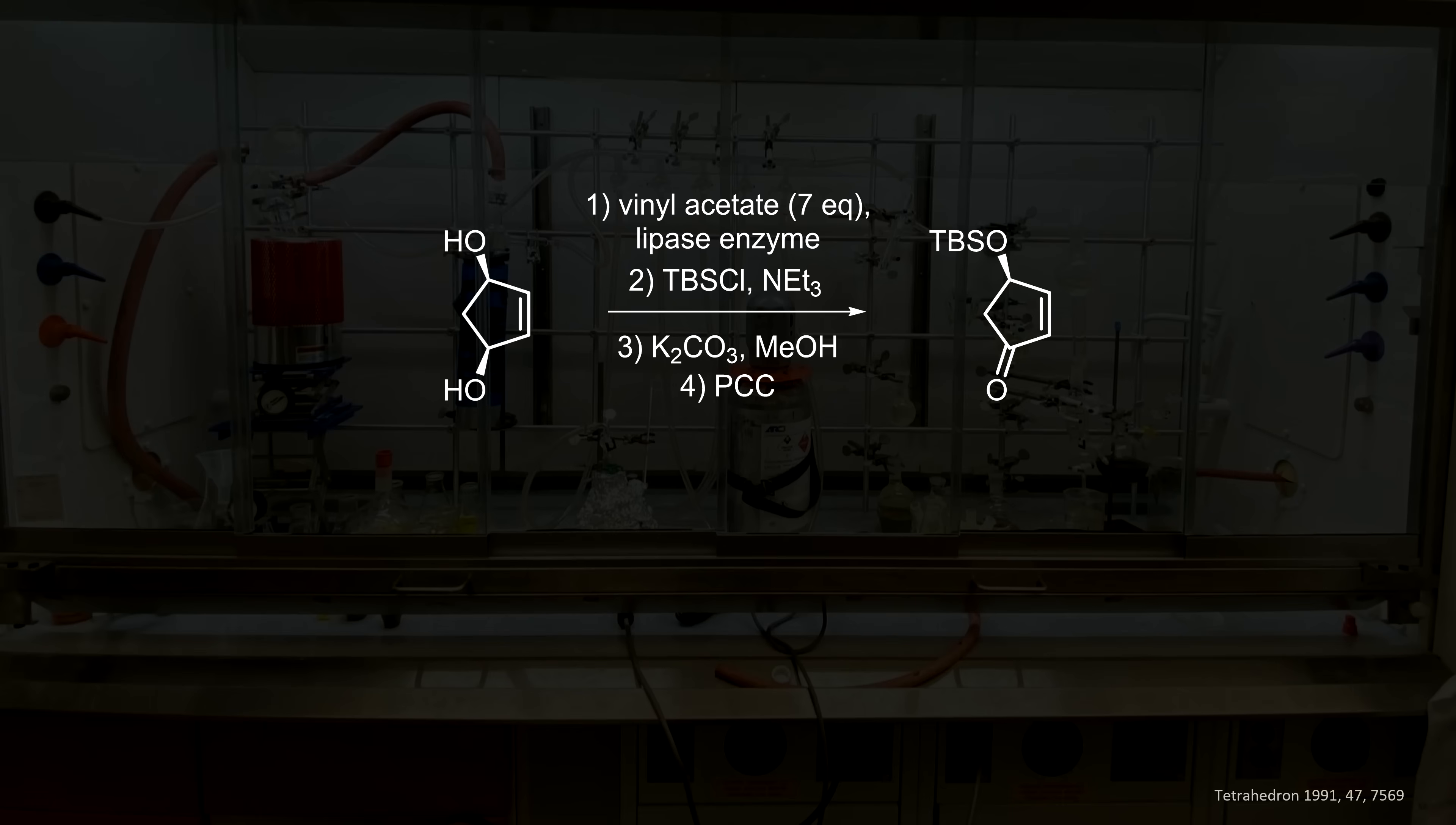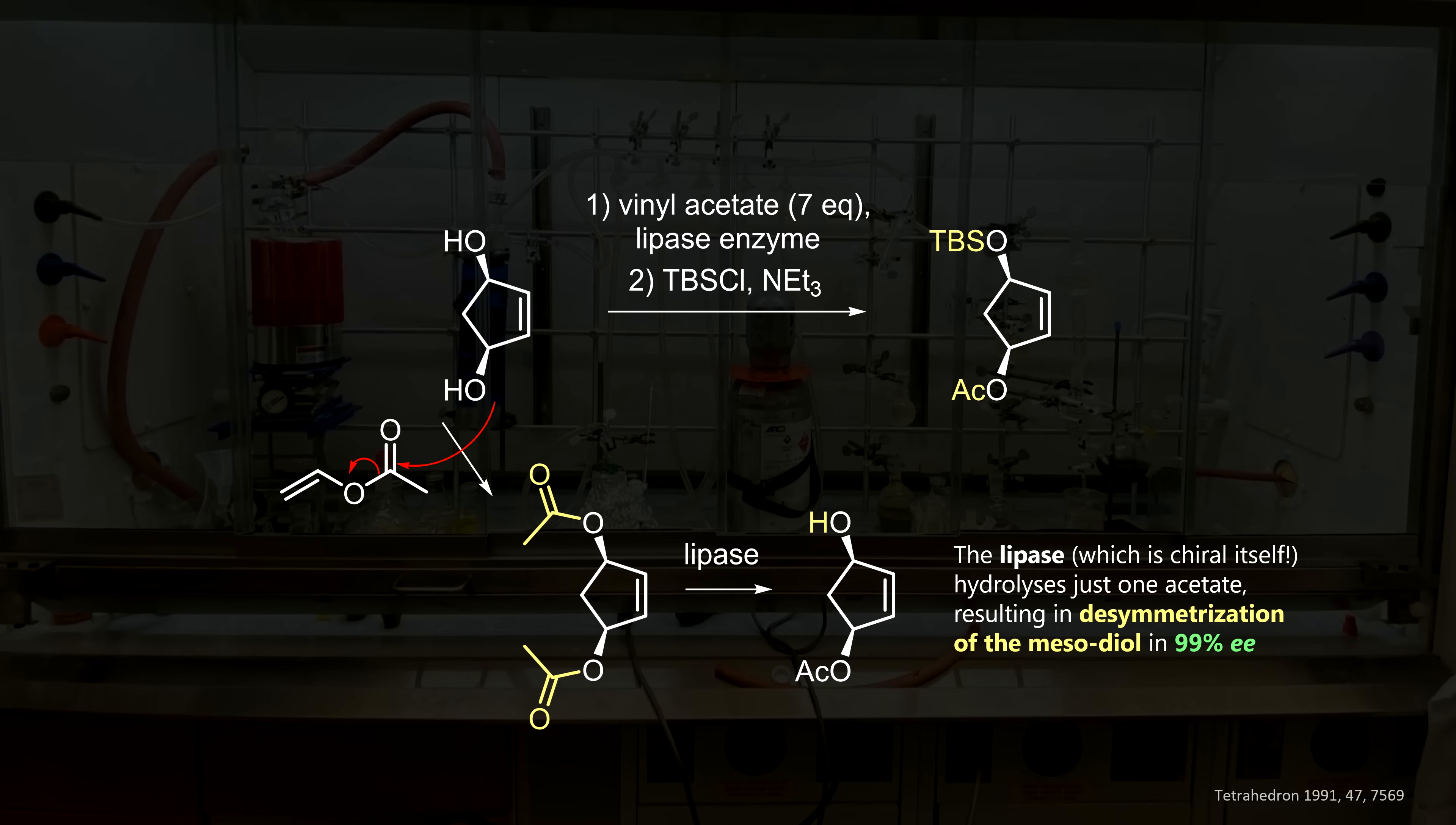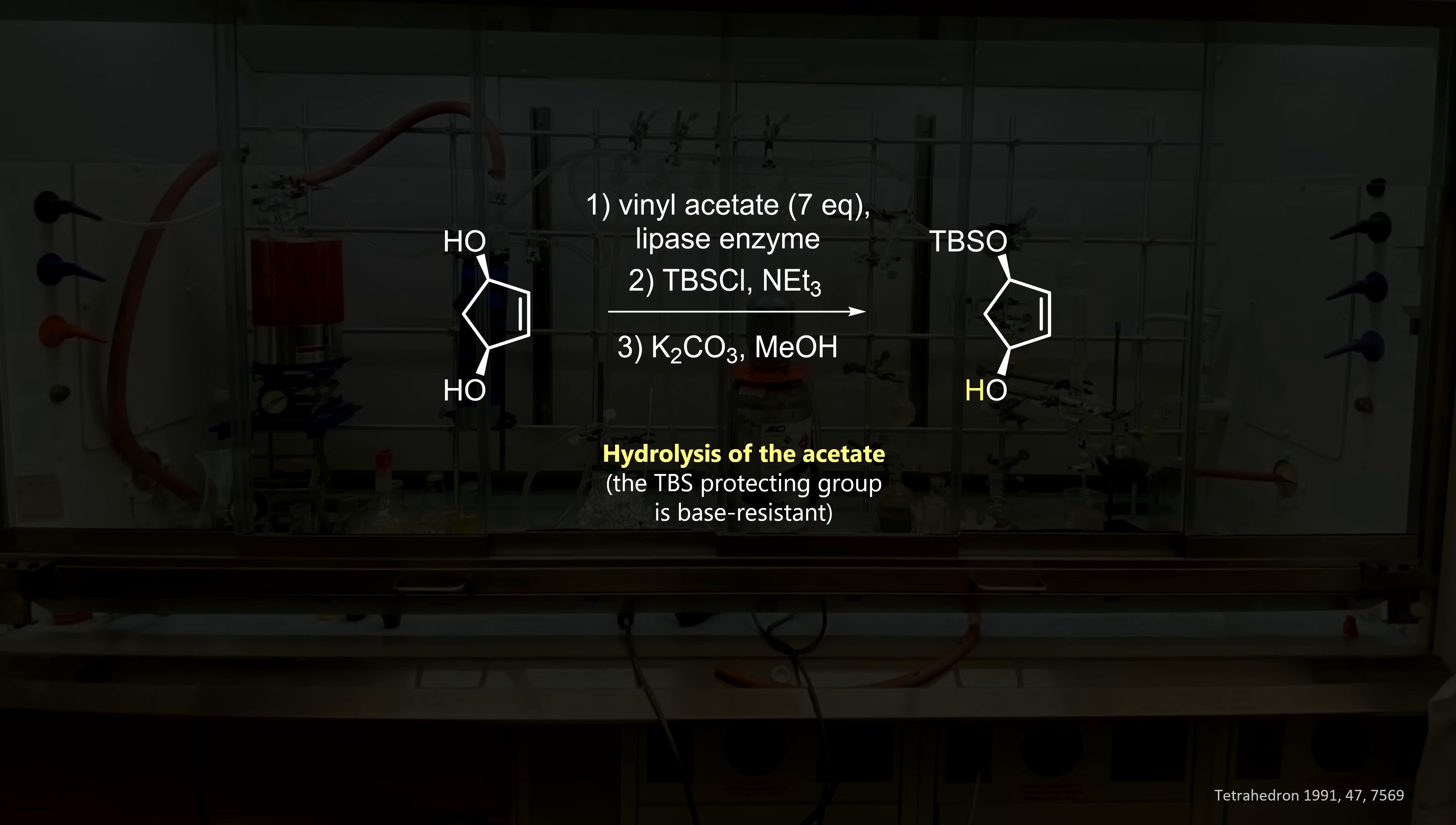The next four steps break this symmetry and already deliver our advanced 5-membered ring intermediate. Again, feel free to think about this yourself. The first step is actually biochemistry using a so-called lipase. These are enzymes that catalyze the hydrolysis of ester bonds. By adding excess vinyl acetate, we get a mesodiacetyl compound. The enzyme is chiral itself, so simply put, it only wants to hydrolyze one of the alcohols. This breaks the symmetry, liberating the free hydroxyl group while leaving one acetyl group untouched. In the second step, this hydroxyl is protected as the TBS ether. Remember that this is the group that we want to eliminate later on to enable our domino reaction. Steps number 3 and 4 are deprotection of the acetate and oxidation to the ketone, completing our Michael acceptor.